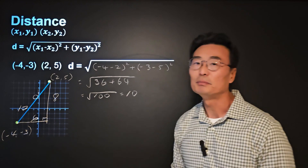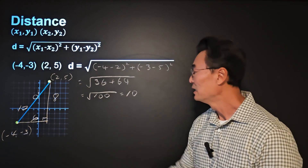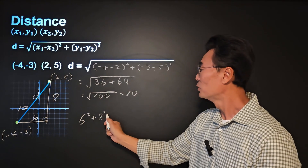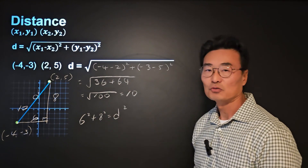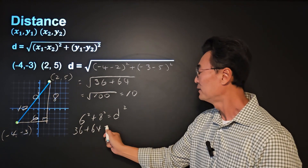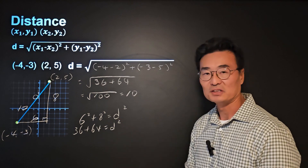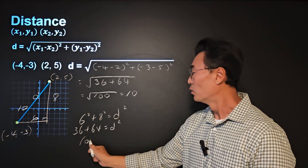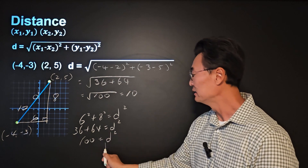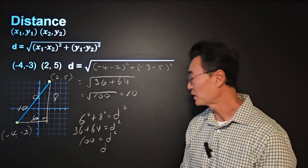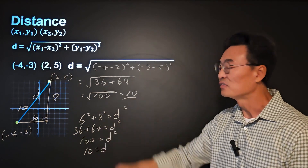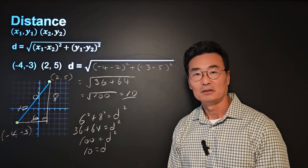If we let d be the hypotenuse of that triangle, then 6 squared plus 8 squared equals d squared, or 36 plus 64 equals d squared, so 100 equals d squared, making d — the hypotenuse of the right triangle — equal to 10, which is the distance between the two points.